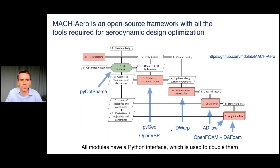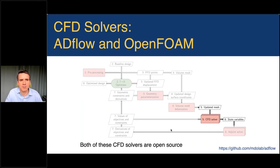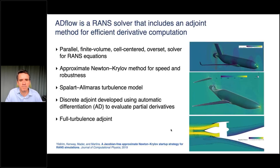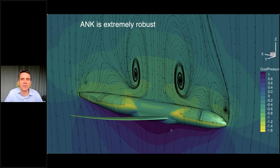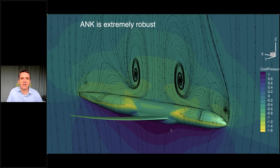For CFD solvers, we can use ADFlow or OpenFOAM. ADFlow is our in-house CFD solver — very robust, runs in parallel, uses a new approximate Newton-Krylov method that is both fast and robust. This robustness is really important during optimization, because you will encounter situations you wouldn't normally choose for a CFD solver — for example, a Boeing 777-type airplane flying at 85% the speed of sound at 90 degrees angle of attack. The optimizer could call for such extreme cases.